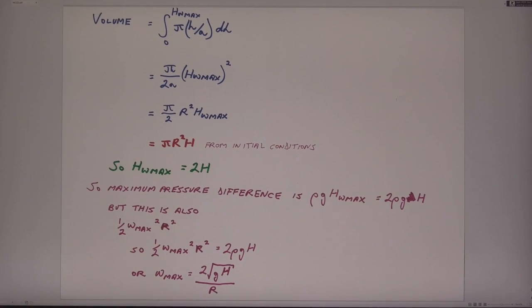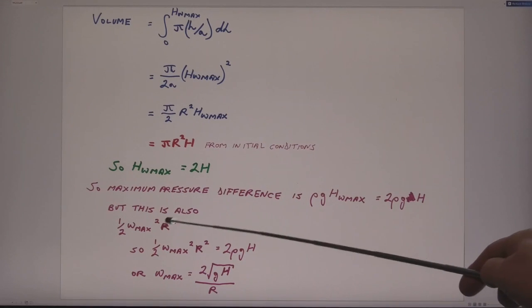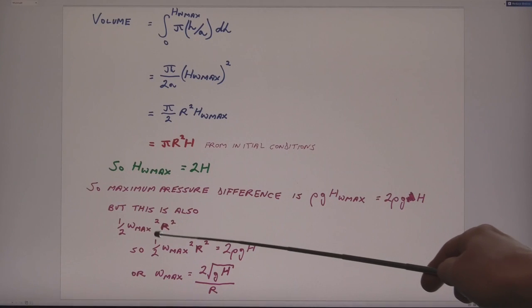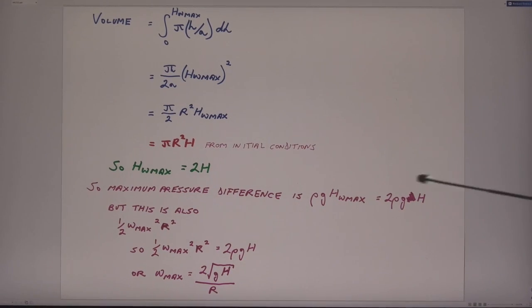So the maximum pressure difference between the center and the edge of the beaker, if I consider the height, will be rho g h omega max, which I know is going to be 2 rho g h. But this is also going from the center of the beaker to the edge of the beaker, a half omega squared max r squared from the previous calculation we did on an earlier page. So I can equate the two, and I get this term here, or rearranging omega max equals this, which is what quite a few of you got.